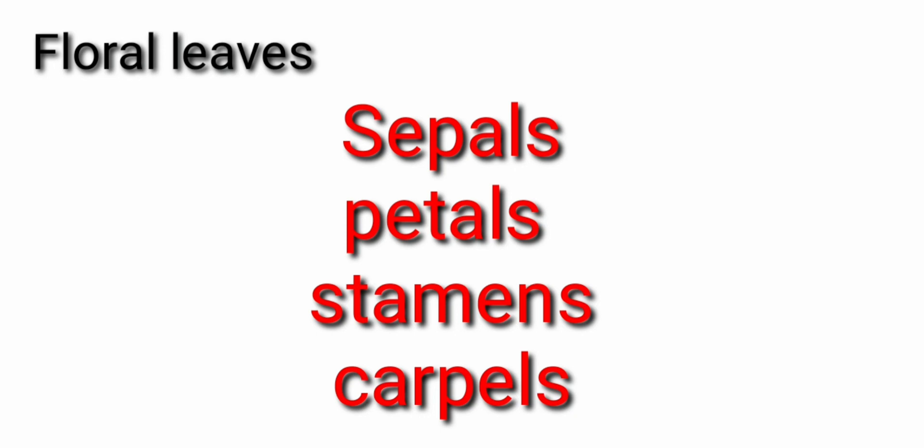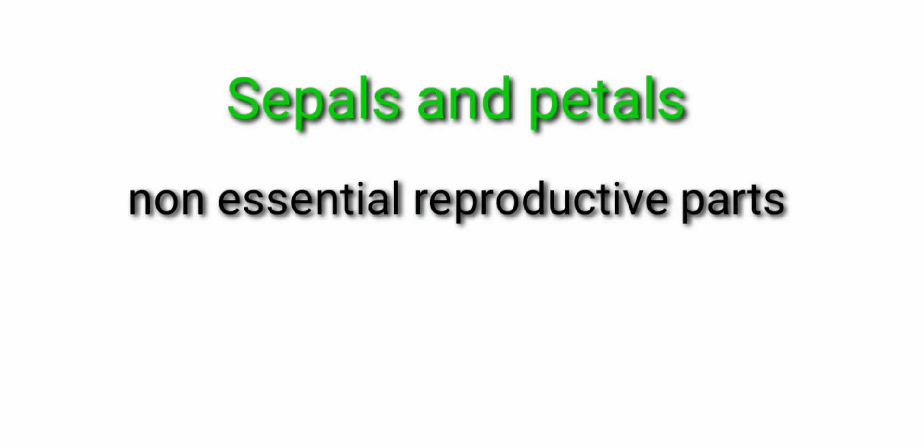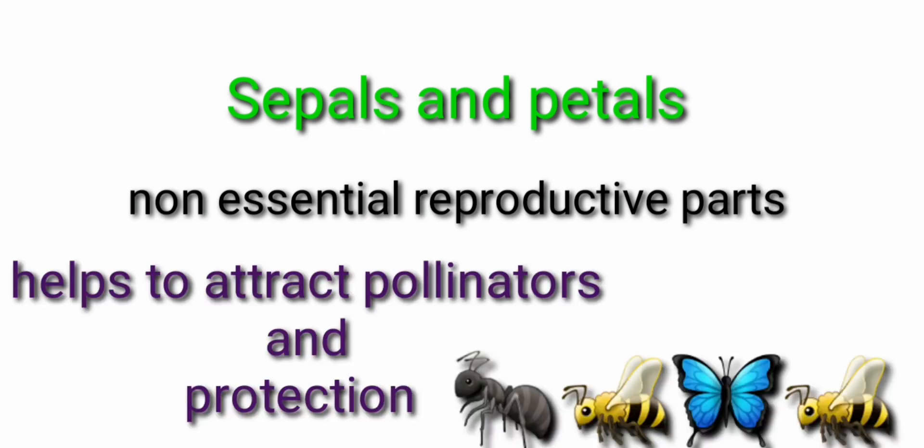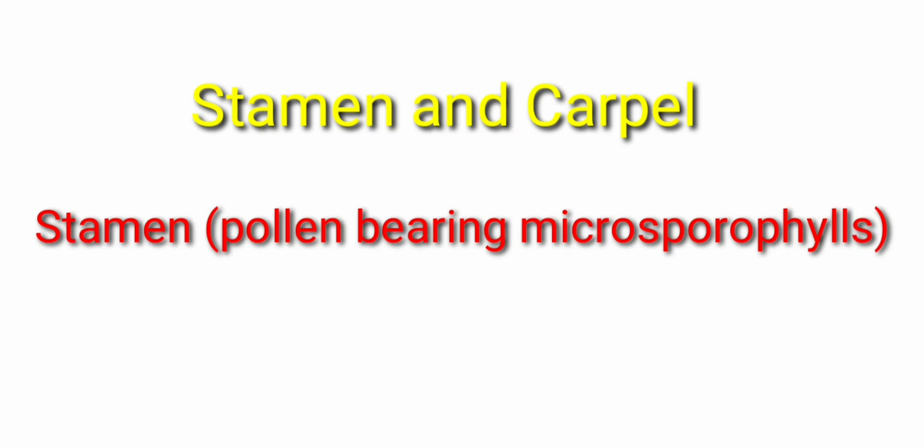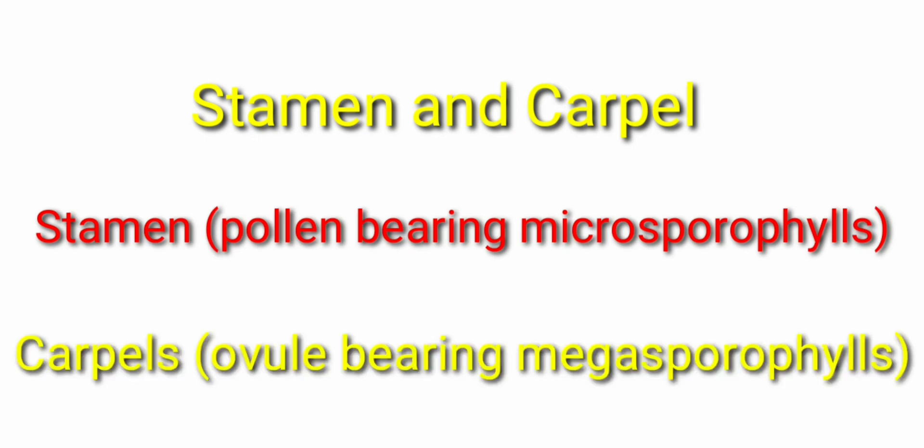Next one is the floral leaves. Sepals, petals, stamens, and carpels - these are the parts of flowers. Here, sepals and petals are termed as non-essential reproductive parts which help to attract the pollinators and to do the protection purpose or process. Next, stamens and carpels are the part of reproductive process, that is essential part of reproduction. Stamen is the pollen-bearing microsporophyll and carpels are the ovule-bearing megasporophyll.